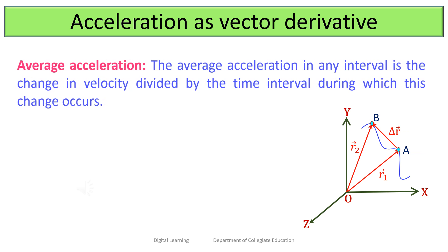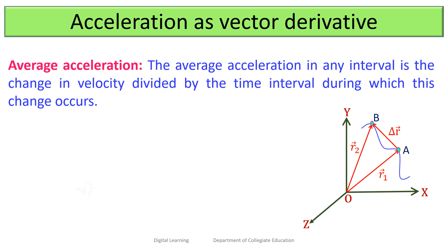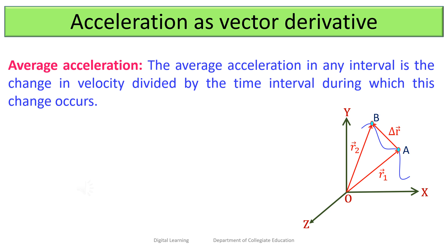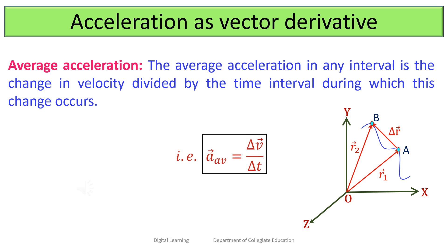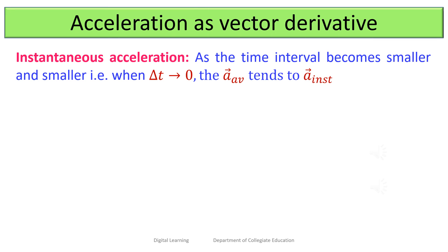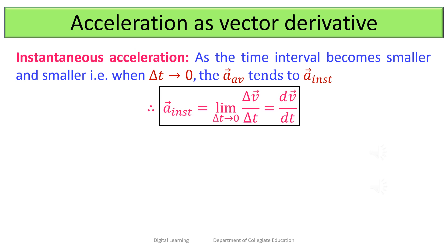The average acceleration in any interval is the change in velocity divided by the time interval during which this change occurs. If Δv represents the change in velocity in a time interval Δt, then the average acceleration is a⃗_av = Δv⃗ / Δt. As Δt tends to 0, the average acceleration becomes the instantaneous acceleration, given by a⃗ = lim(Δt→0) Δv⃗/Δt = dv⃗/dt.